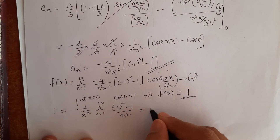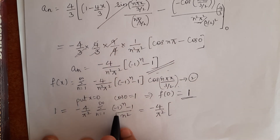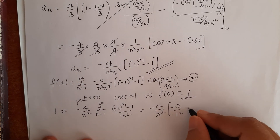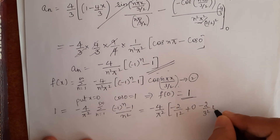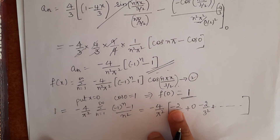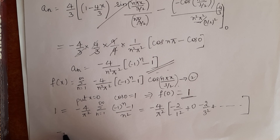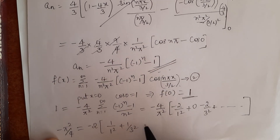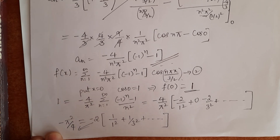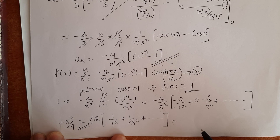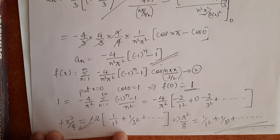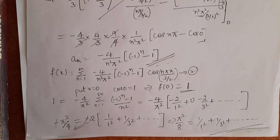Expanding the summation: when n=1, (minus 1)¹ minus 1 equals minus 2 divided by 1 squared; when n=2, the term is 0; when n=3, minus 2 by 3 squared; etc. Taking out minus 2 as a common term and cross-multiplying, the negative signs on both sides cancel, giving pi squared by 8 equals 1 by 1 squared plus 1 by 3 squared plus 1 by 5 squared plus etcetera. This is the required deduction. We will continue the problems in the next video.